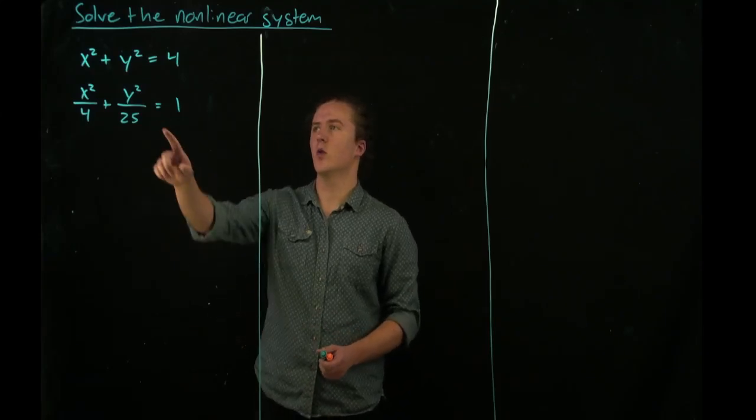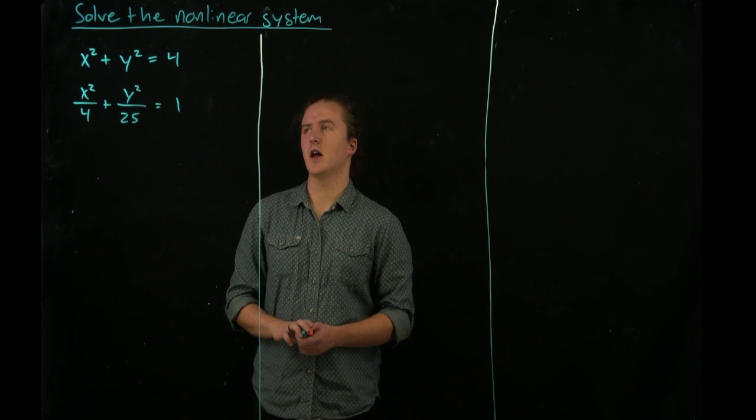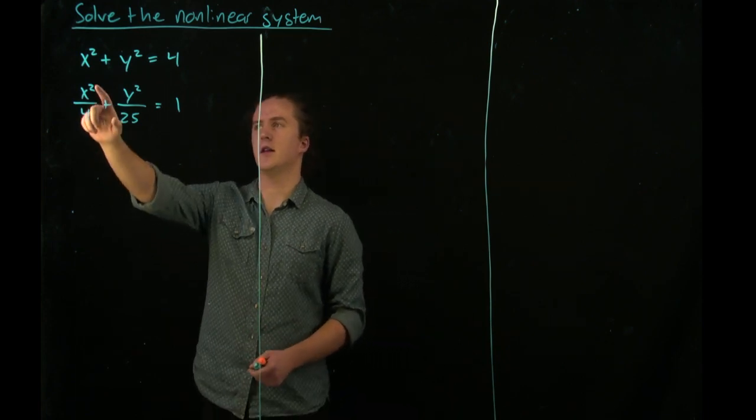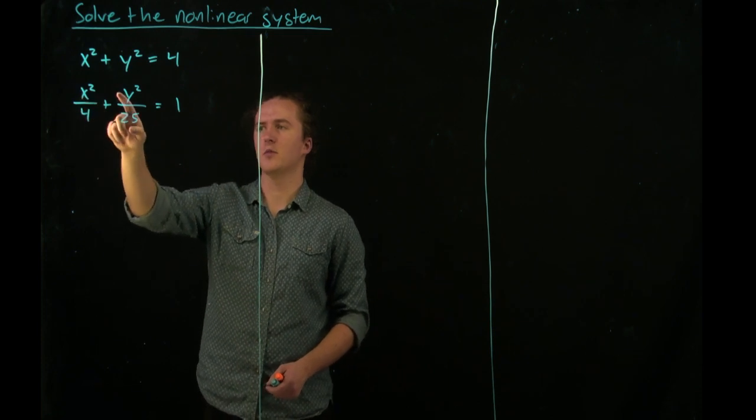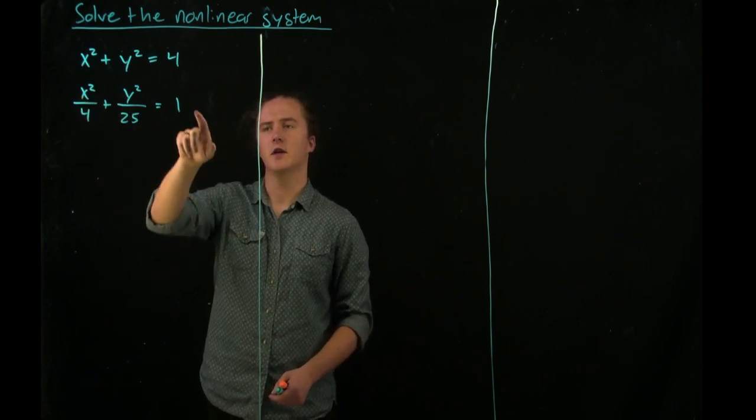Hello. Today we will solve the following nonlinear system given by the equations x squared plus y squared equals 4 and x squared over 4 plus y squared over 25 equals 1.